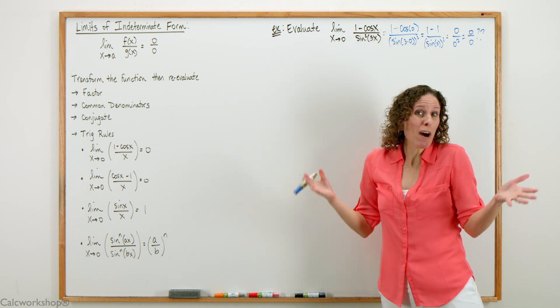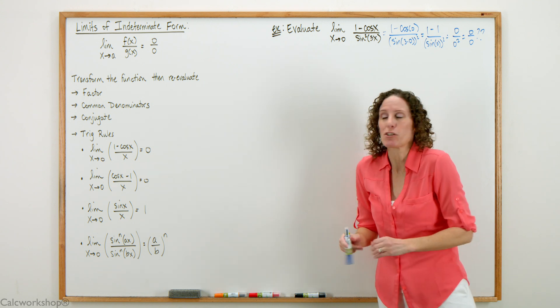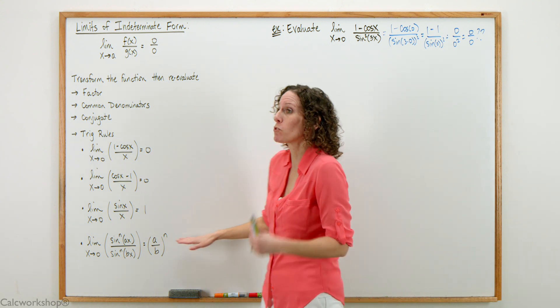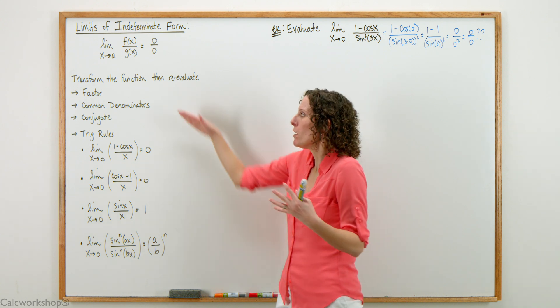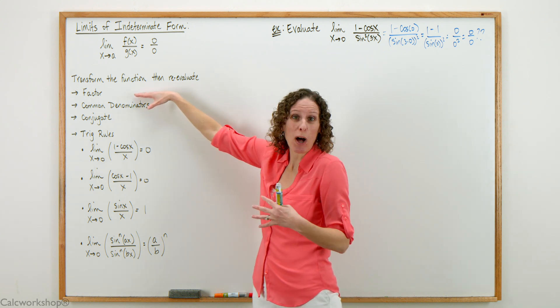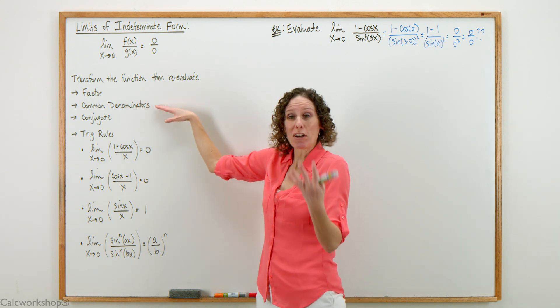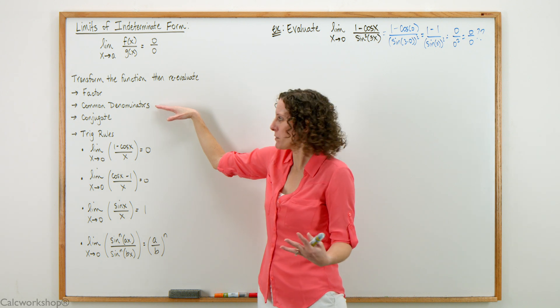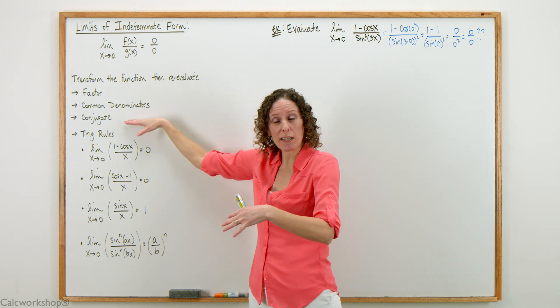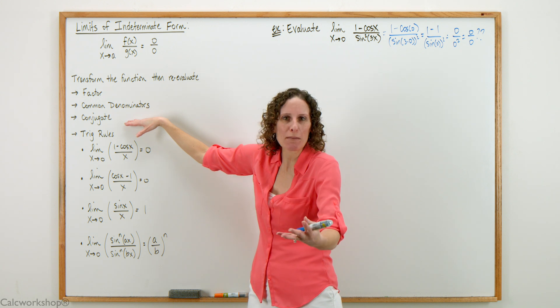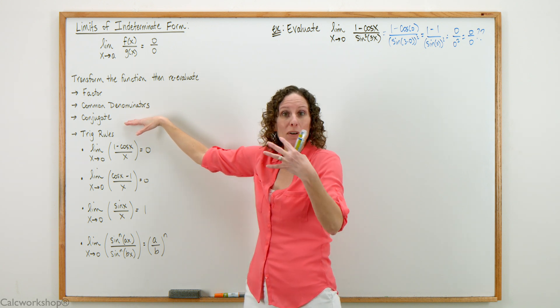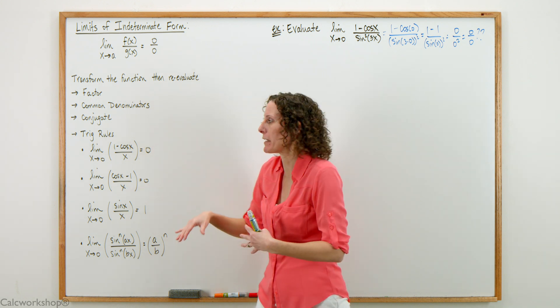So what do we do now? We don't give up, we have to try some manipulation. Here are the possible choices when evaluating a limit of indeterminate form: first try to factor if it's a polynomial function, use common denominators if we've got multiple fractions, use the conjugate, a binomial pair, to help simplify.